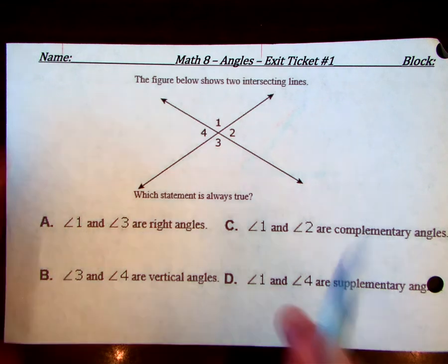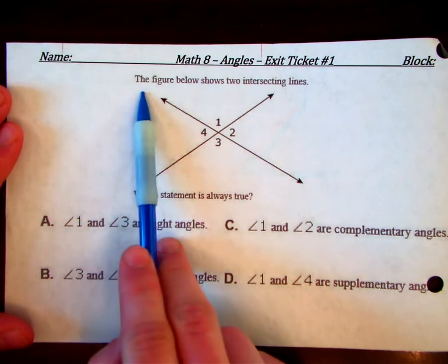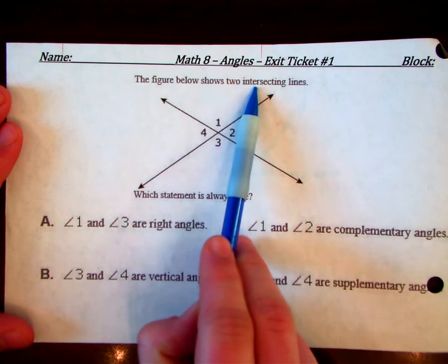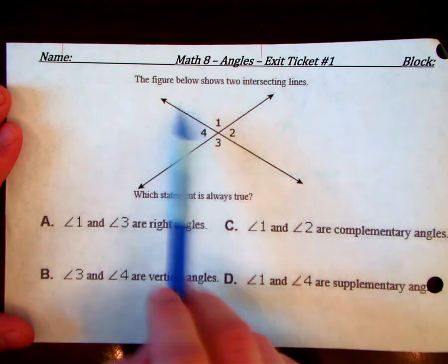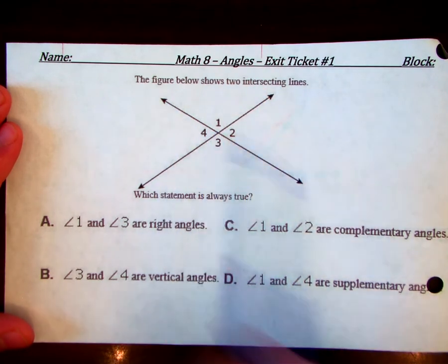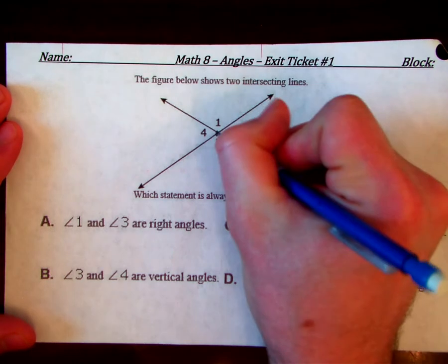On the back of the exit ticket, it says this. It says the figure below shows two intersecting lines. That means they intersect or they hit at a vertex, which I can point out right there.